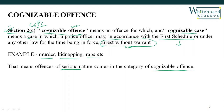So if the police receive information or a complaint about an offence of murder, kidnapping, or rape, they can arrest immediately. They don't need to obtain a warrant.